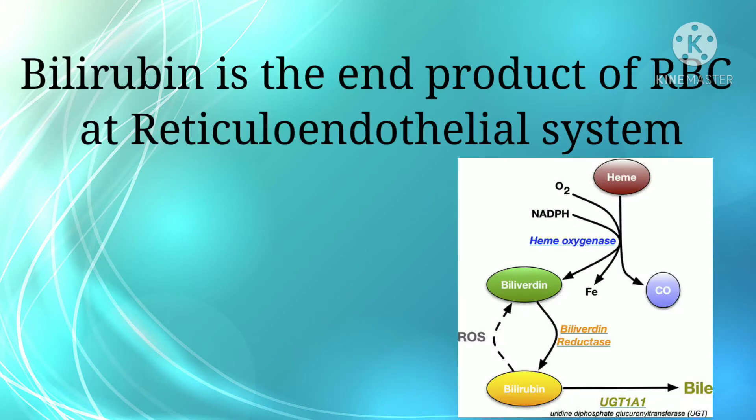Firstly, in hepatic circulation, bilirubin is the end product of RBC breakdown at the reticulo-endothelial system. That means when RBC breakdown happens, bilirubin is the end product of it.